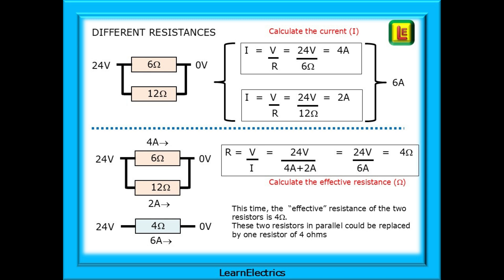The total current is therefore 4 plus 2, which is 6 amps. Now calculate the effective resistance. What single resistor value can replace the two resistors in parallel? What single resistor will conduct 6 amps of current with a 24 volt supply? Back to Ohm's law and resistance is voltage divided by current. R equals V over I. 24 volts divided by 6 amps is 4 ohms. This time, the effective resistance of the two resistors is 4 ohms. These two resistors in parallel could be replaced by one resistor of 4 ohms.